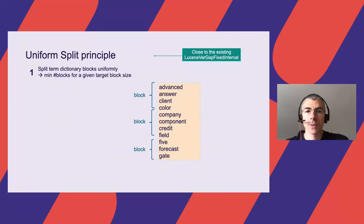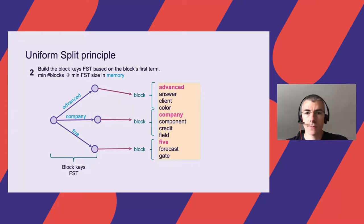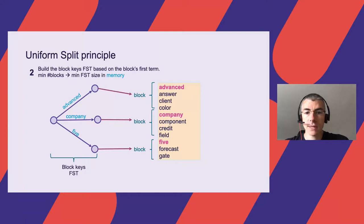What is Uniform Split? It's a technique to write the inverted index. The inverted index is composed of blocks of terms to split the search efficiently. Standard block tree builds blocks based on common prefixes of the terms. Uniform Split builds blocks by targeting a uniform block size — the number of terms in a block. To access those blocks, we map them with an efficient and very compact data structure, the Lucene FST. We call 'block key' the first term of each block and store the block keys in the FST. By placing blocks uniformly, we get a minimal number of blocks, so the FST size is minimized.